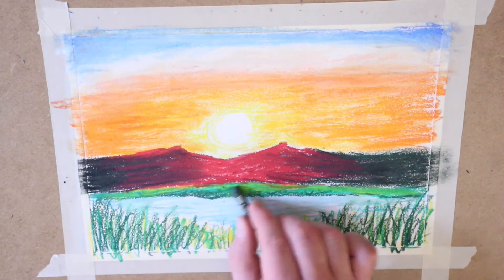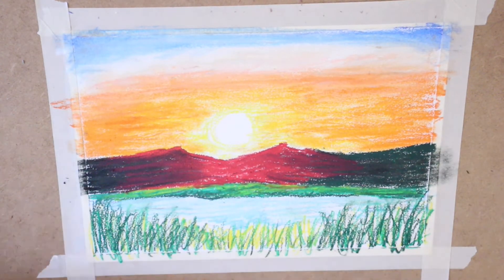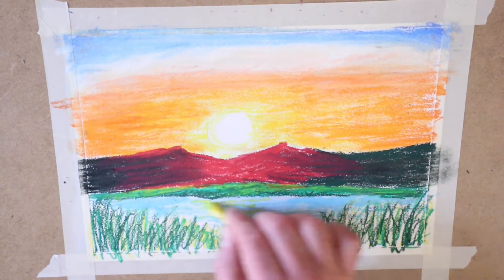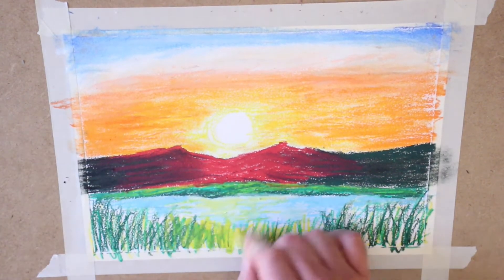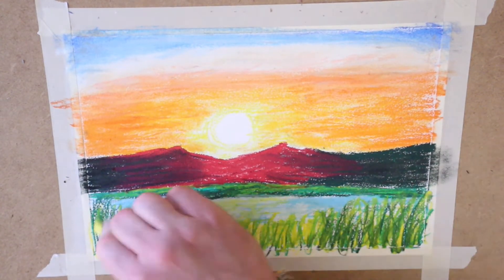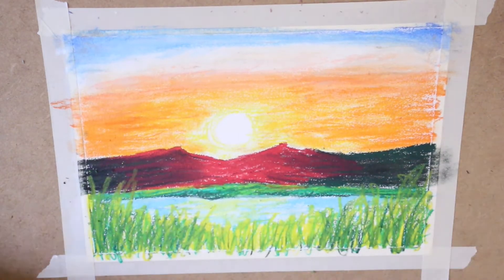So for this work, touching on what we read about, we have our background, which is the sunset. We have our middle ground, which is the grass and the water. And then we have our foreground, which is the tall grass and then later on some of the trees. Your work should have all three of those elements as well.